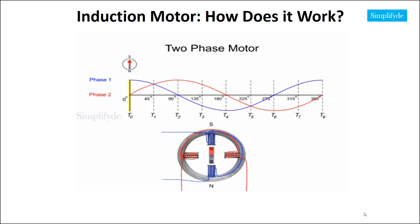At time 1, phase 1 and phase 2 have equal amounts of current flow, which creates a flux between the adjacent poles. This flux causes the rotor to turn 45 degrees to the left.